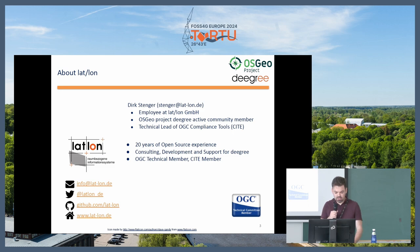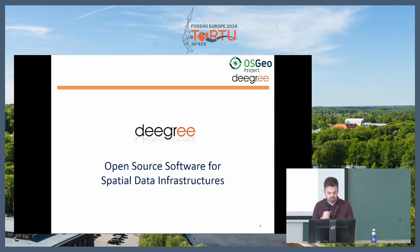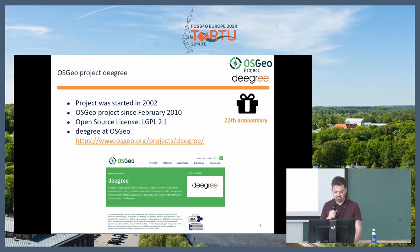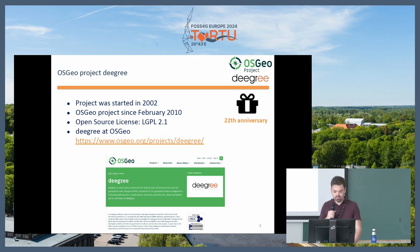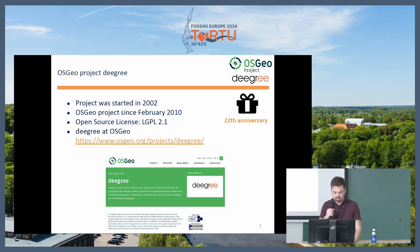LATLON is a quite old company — it was founded around Degree. Degree is basically an open-source software for spatial data infrastructures and it implements OGC standards. The project was started in 2002, so it's already 22 years old. It's been an OSGEO project since February 2010, so that's already 14 years. The license is LGPL2.1, and we have a website on the OSGEO page as well.